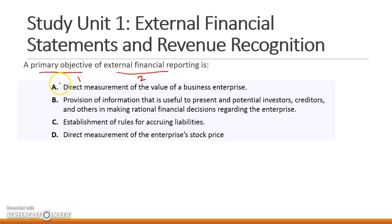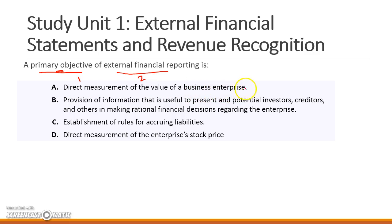We have to identify which of these four options is the primary objective of external financial reporting. Keep in mind that all of them may in some way be objectives, but we have to identify only the primary objective. Let's discuss each option one by one. Option A — direct measurement of the value of a business enterprise — this is not the primary objective of financial reporting.